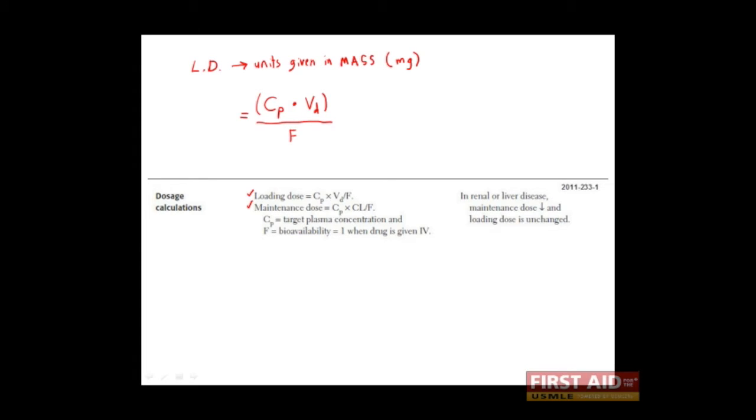Bioavailability is a fraction and therefore has no units. It tells us what fraction of our drug actually makes it into the plasma. Of course when we give a drug by IV, 100% of the drug enters the plasma and therefore the bioavailability is 1.